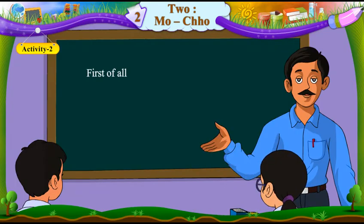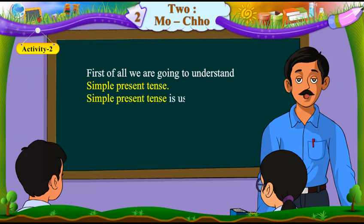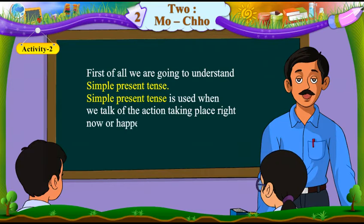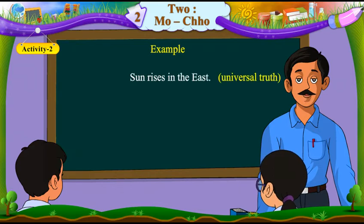First of all, we are going to understand simple present tense. Simple present tense is used when we talk of the action taking place right now, or happens regularly, or if it is a universal truth. For example, sun rises in the east. Shilpa writes a letter. I eat an apple every day.